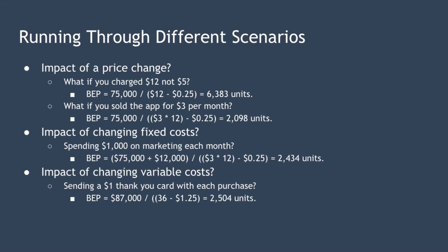What would happen if you sold your app for $12 instead of $5? In this instance you'd need to sell 6,383 units to break even — calculated as 75,000 divided by (12 minus 0.25). That's still a high number of units. So what if you sold the app for $3 per month and expected your customers to stay for an average of one year? In that case you'd need to sell just 2,098 copies of your app to break even.